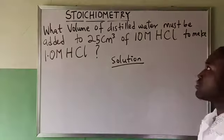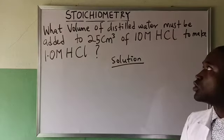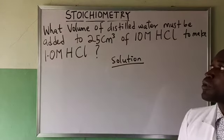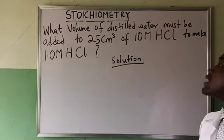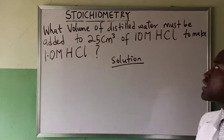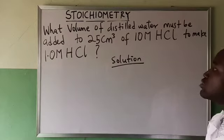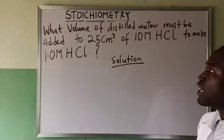Welcome again to another interesting question on stoichiometry. What volume of distilled water must be added to 25 cm³ of 10 molar HCl to make 1.0 molar HCl?